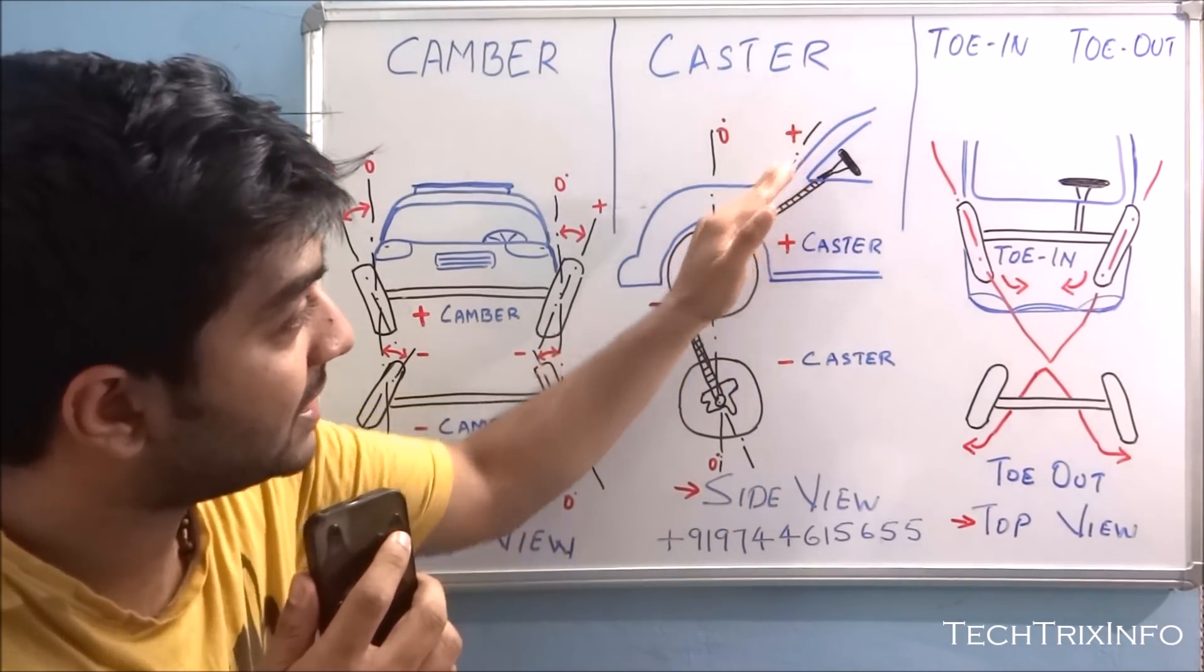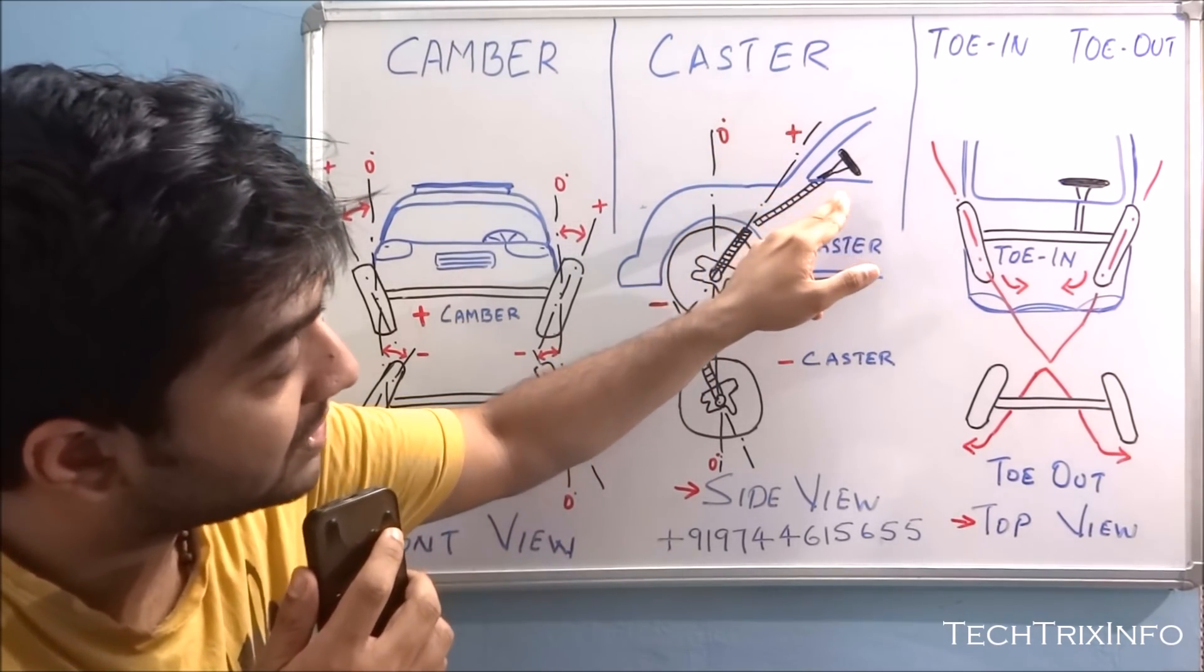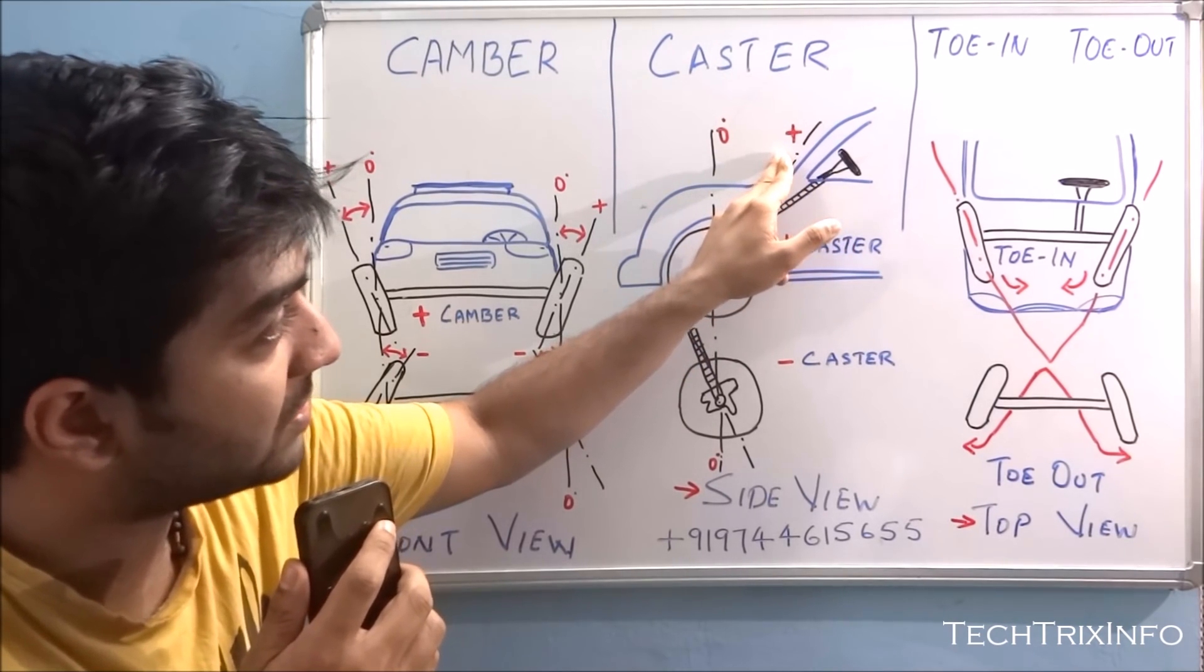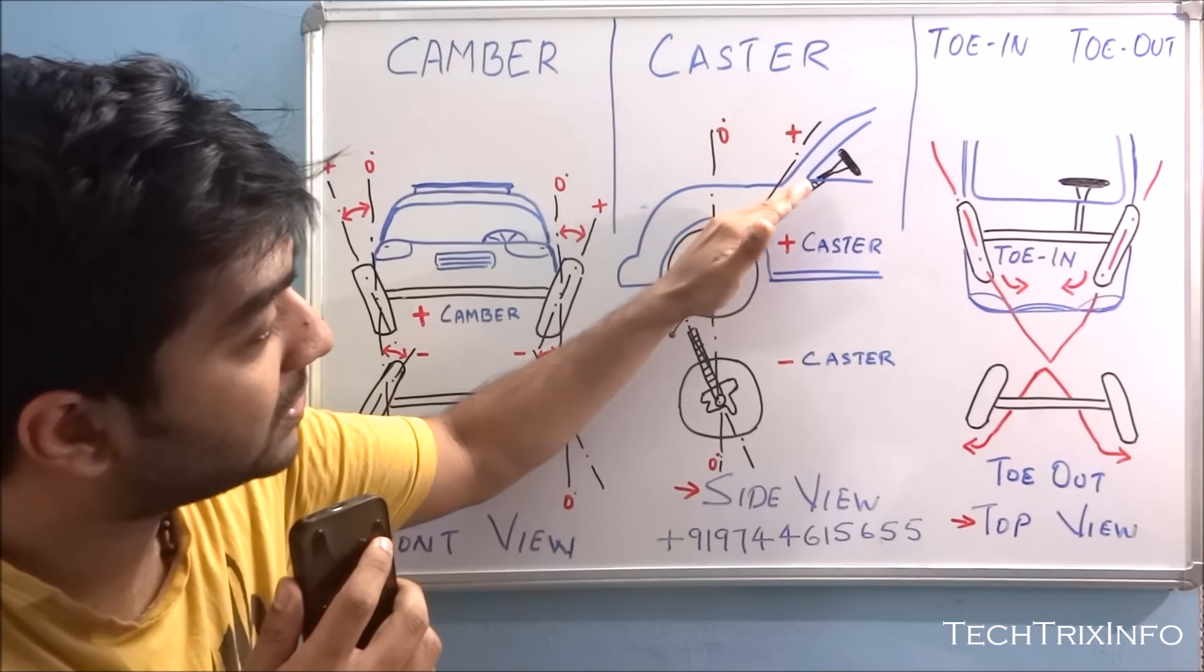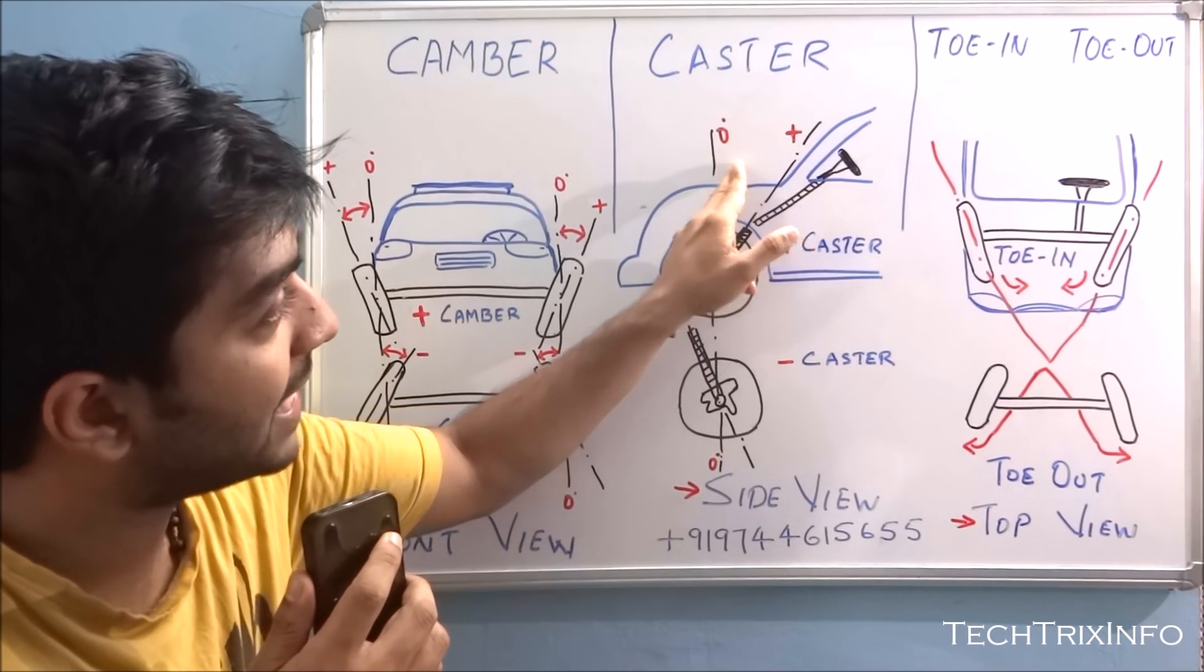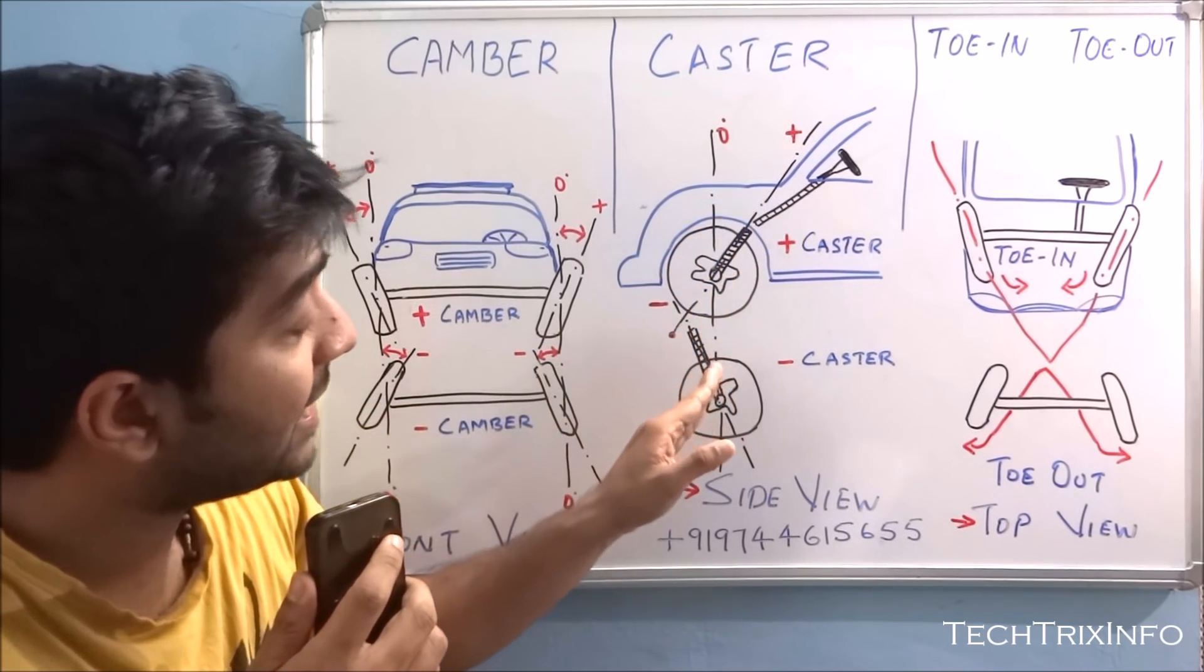This is the steering axis here you can see, and this is the vertical axis. If the steering axis is inclined towards the driver's side, it's a positive caster. So this is the driver's side and you can see this is the steering axis. It's inclined towards the driver. So here this angle is our caster, zero to positive caster.